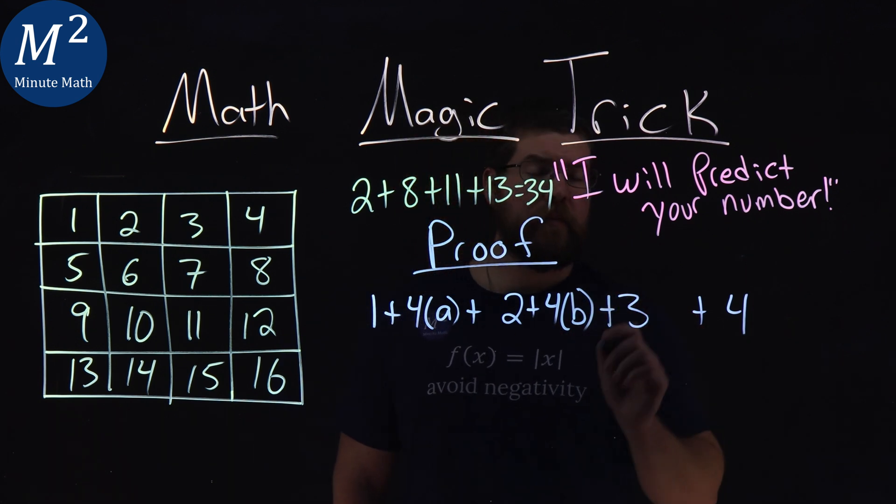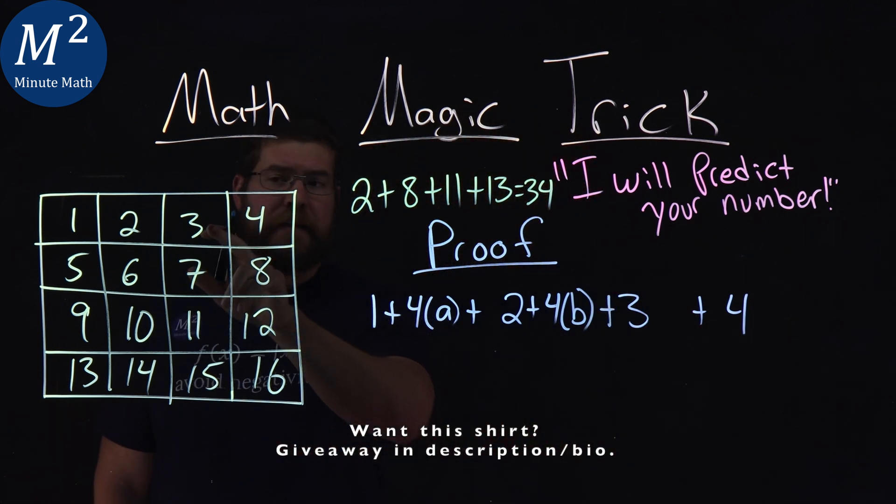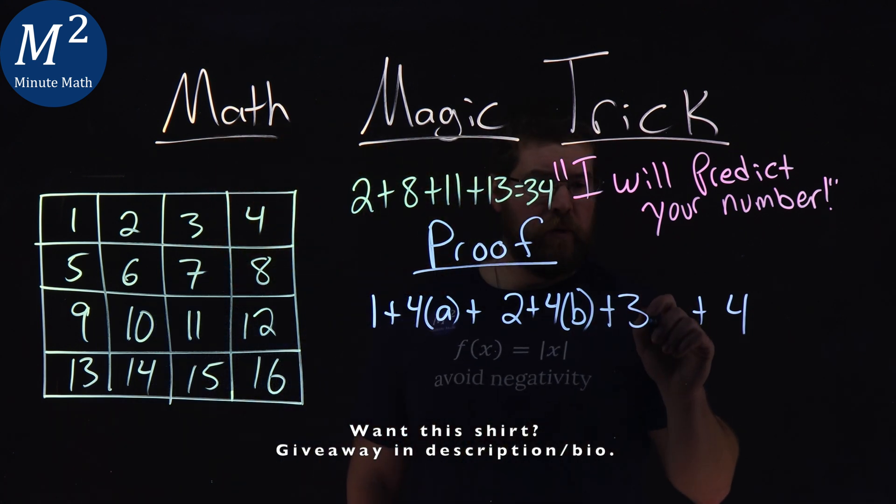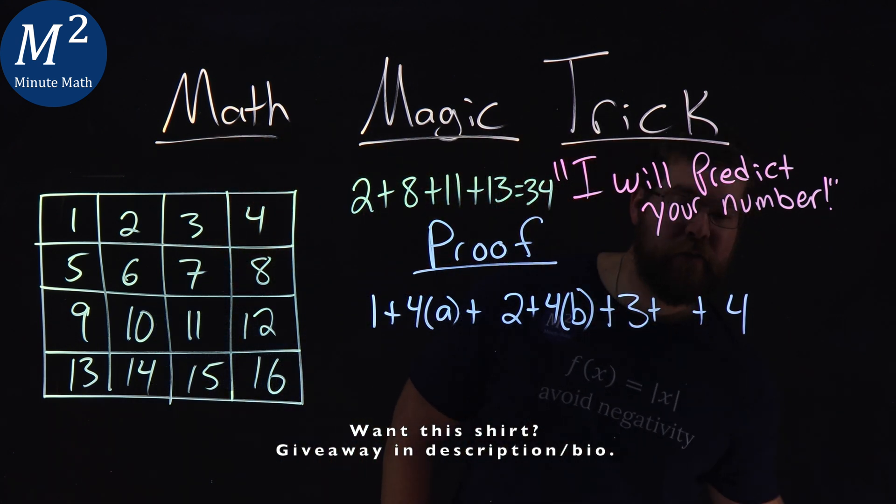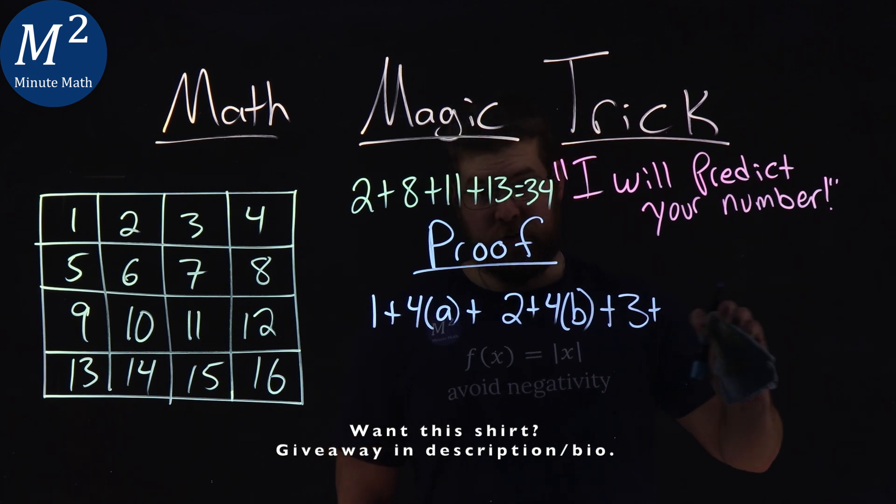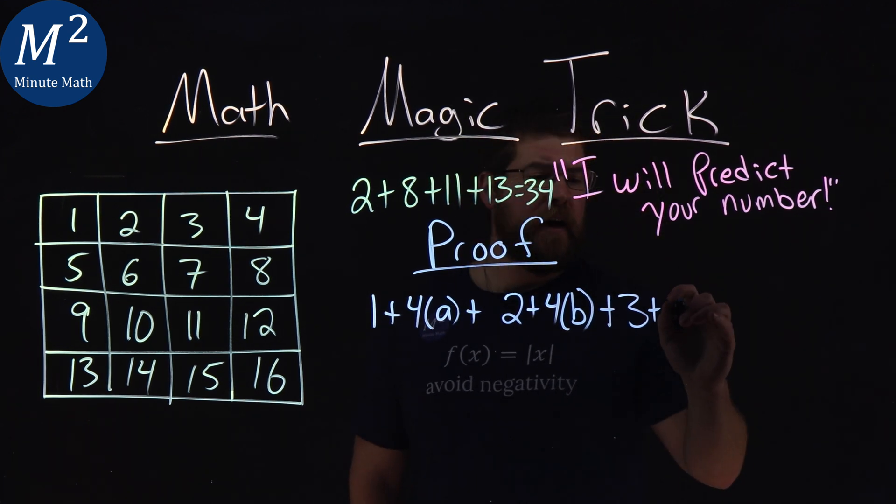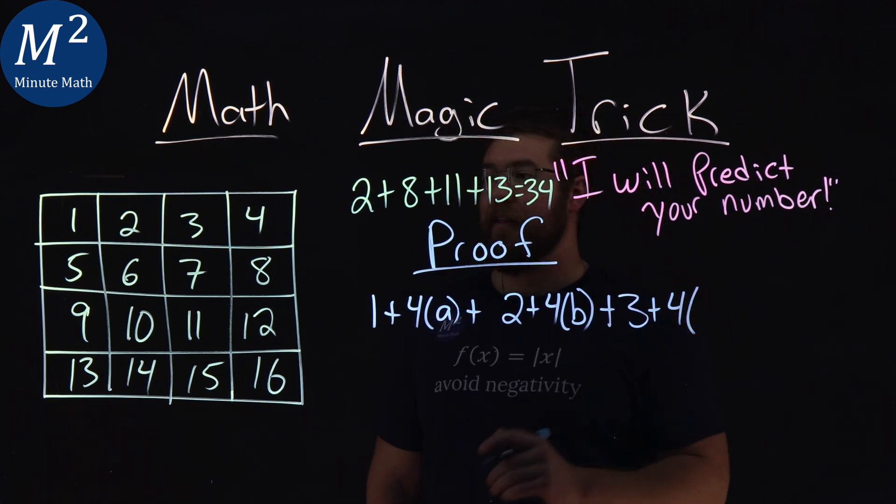And then we're going to add that to three as well. The third column, same idea. Four apart for each one, so we have three plus four—I didn't give myself enough space, classic move. So three plus four times, let's say, the letter c. We don't know what the c value is.